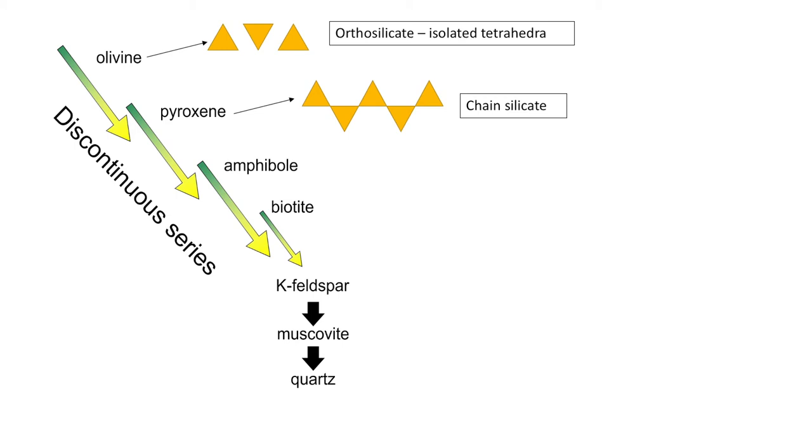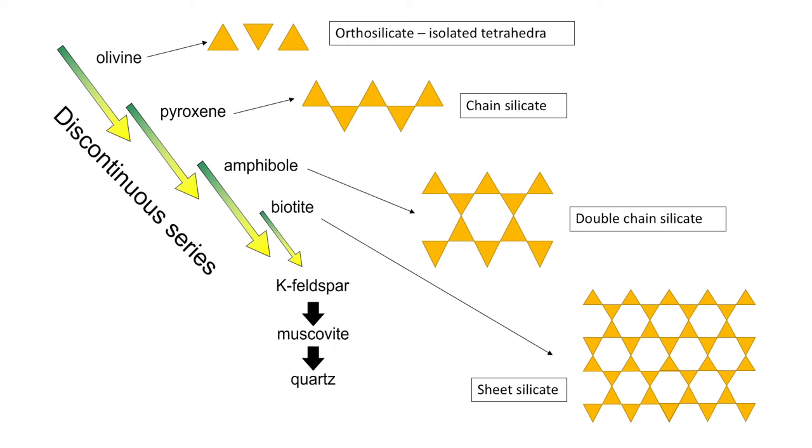Again the same thing will happen with amphibole replacing pyroxene. Amphibole is a double chain silicate. So now we have more silica, less metal cations. And then finally biotite, which is a sheet silicate where we have silica tetrahedra in the sheets bound by metal cations. For biotite, magnesium and iron.